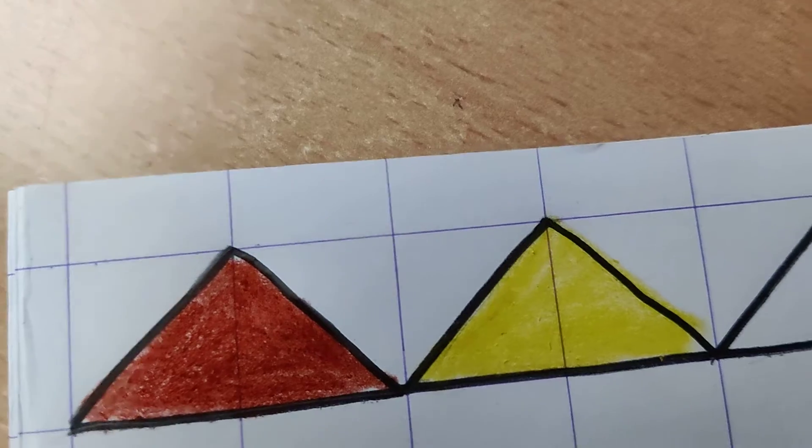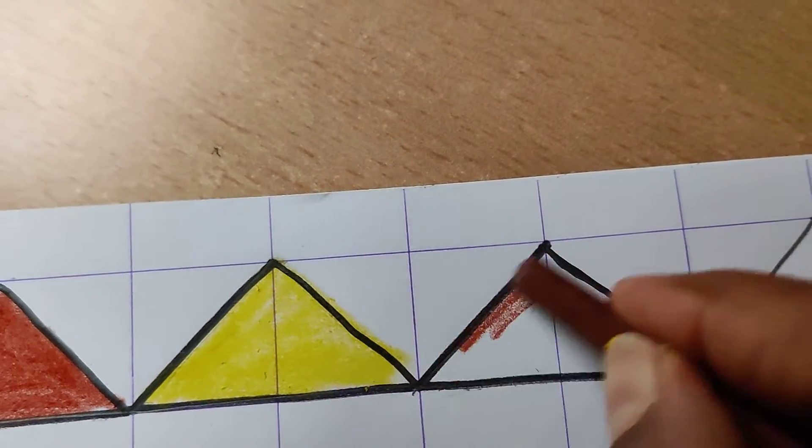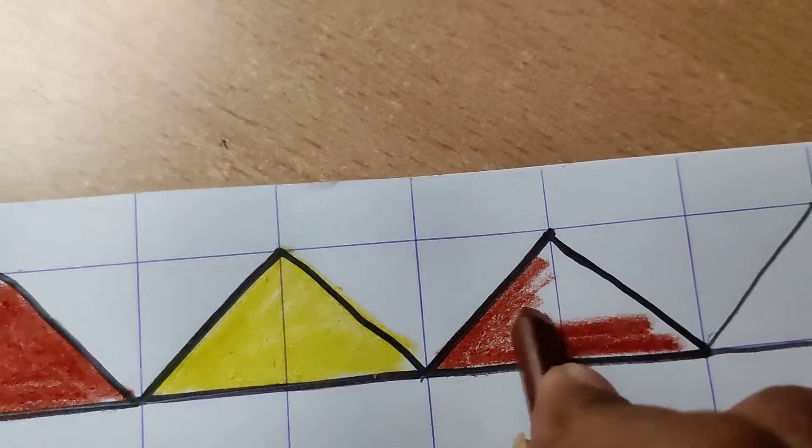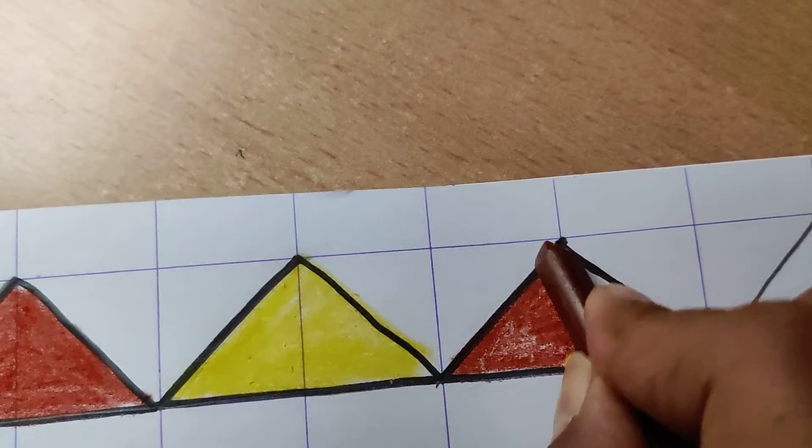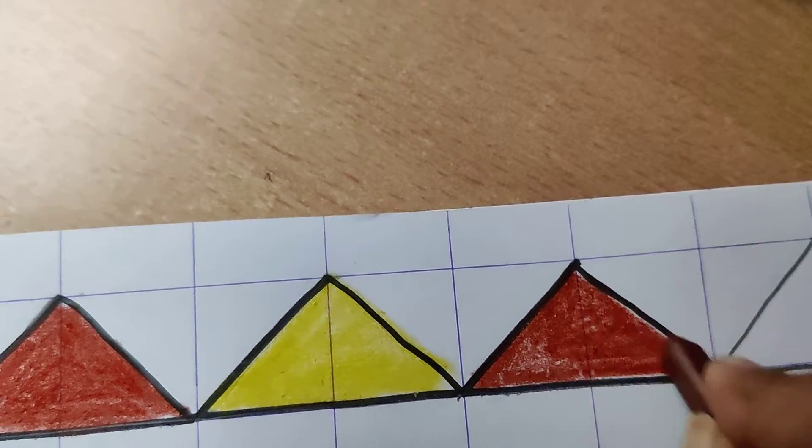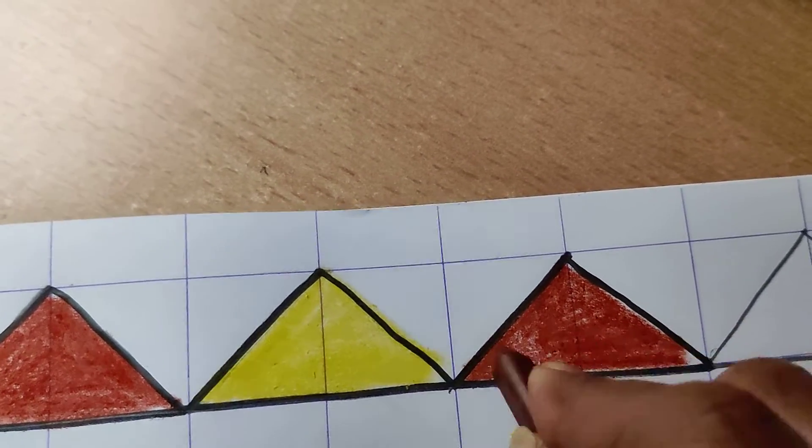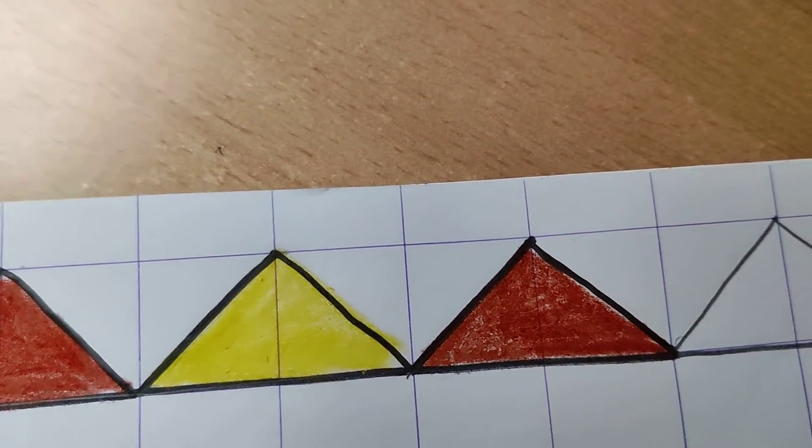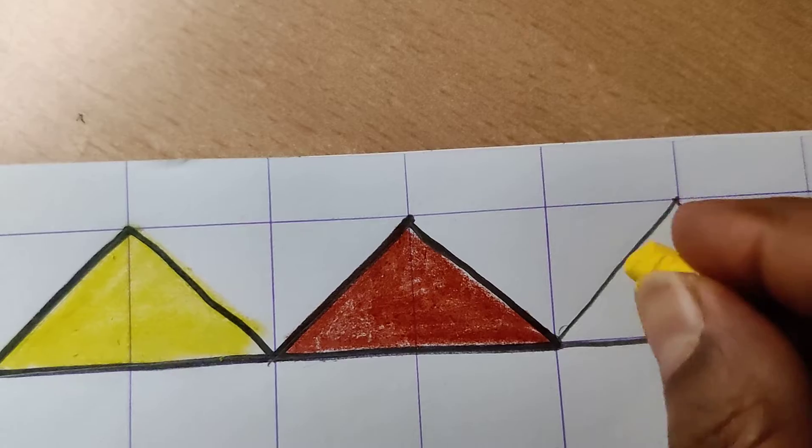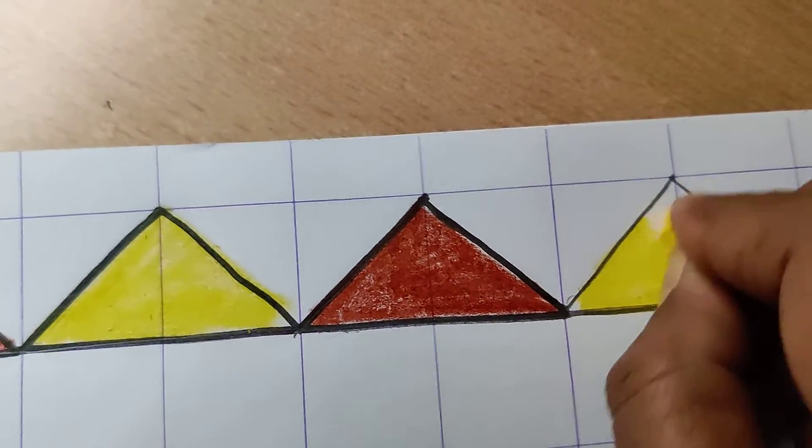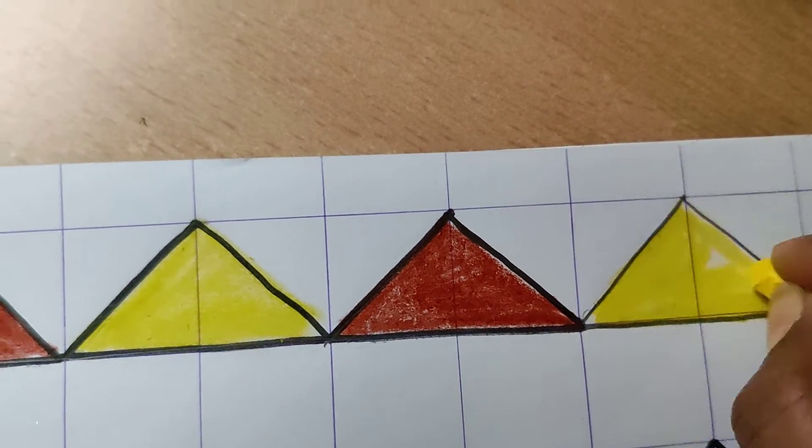Then again brown. So you have to use two colors alternate: one brown, one yellow. Like this, you will color the whole page. All the triangles you have to color in the similar manner. Like this. Now next one will be yellow. I hope you have understood. Now I'll show you in the next line also what you have to do.